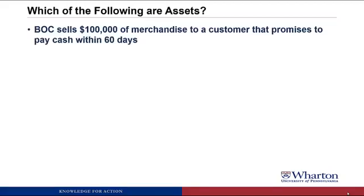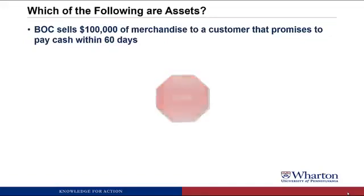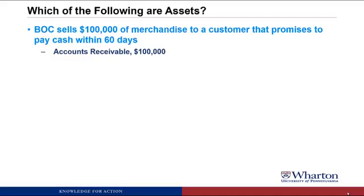BOC sells $100,000 of merchandise to a customer that promises to pay cash within 60 days. This will be an asset called accounts receivable. It's an asset because there was a transaction where we delivered goods to a customer, and in return we got a promise from them to pay cash. The value of the future benefits can be reasonably estimated because it's the amount that customer owes us on the invoice — $100,000.